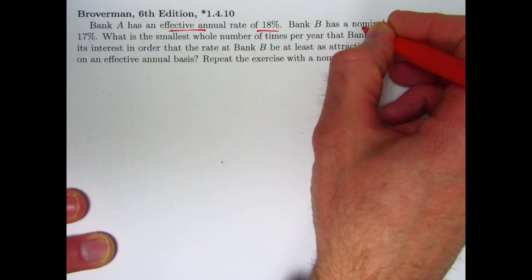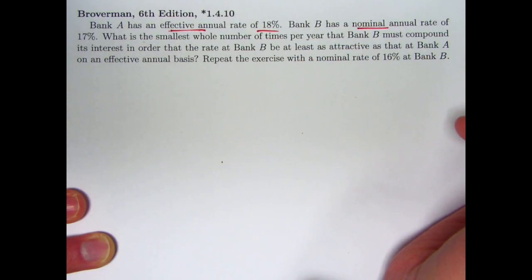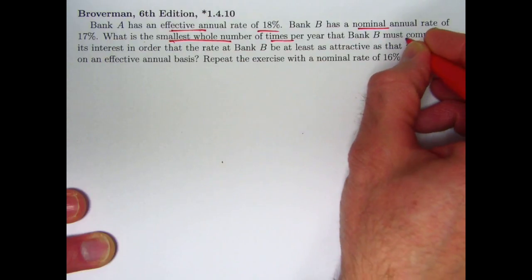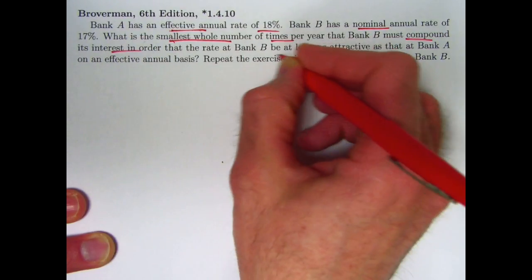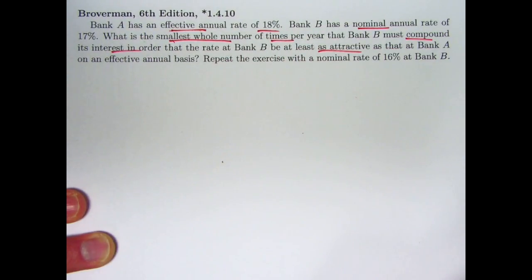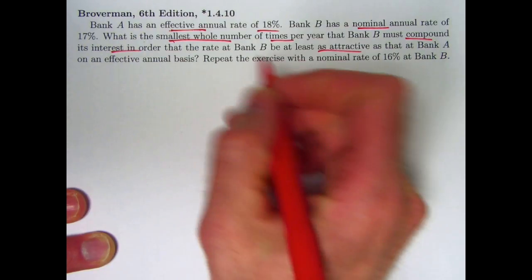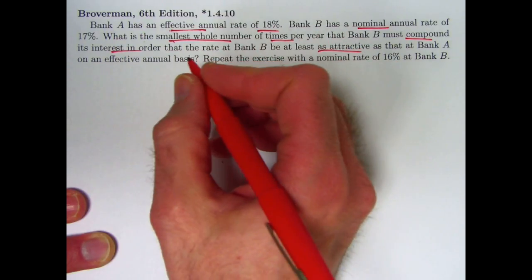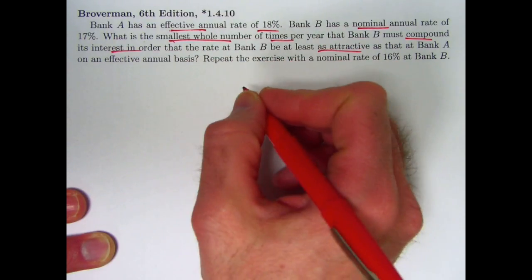Bank B, on the other hand, has a nominal annual interest rate of 17%. It's in name only. It's going to be compounded a certain number of times per year, and we want it to be at least as attractive as bank A. The actual effective annual growth will be bigger than 17% because we're going to compound it more than once per year. What is the smallest whole number of times per year that bank B must compound to be at least as attractive as bank A?